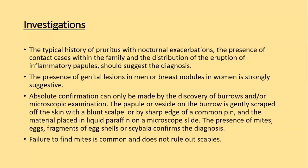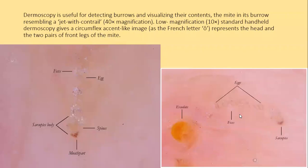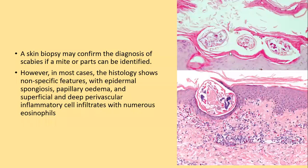The papule or vesicle on the burrow is gently scraped off the skin with a blunt scalpel or sharp edge of a common pin, and material is placed in liquid paraffin on a glass slide and seen under a microscope. Presence of mites, egg fragments, or scybala confirms the diagnosis. Failure to find the mite is common and does not rule out scabies. The dermoscopic finding of scabies is important and is described as a 'jet with contrail' — the appearance of a jet emitting gases from the rear. At low magnification, the dermoscope gives a circumflex accent-like image representing the head and two front pairs of legs of the mite.